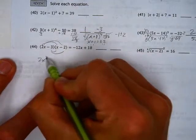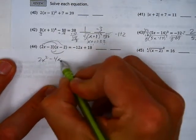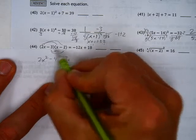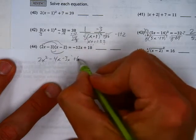That's a 2x squared. The outer is a minus 4x. The inner is a minus 3x. And the last, a negative 3 times a negative 2 is a plus 6.